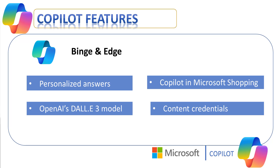Starting with personalized answers: Bing chat history can influence search results with information proactively on related topics. For Co-Pilot in Microsoft Shopping, when asked for information about an item, Bing will ask additional questions to get more details and then offer more personalized recommendations, also helping users get the best price. OpenAI's DALL-E 3 model in Bing Image Creator can make more aesthetic and detailed creations, better understand what is being asked, and provide more accurate images.